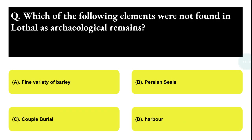Next question: which of the following elements were not found in the Lothal archaeological remains? Option A: Fine variety of barley, Option B: Basin sills, Option C: Goblet, Option D: Harbour. The correct answer is option A, that is fine variety of barley.